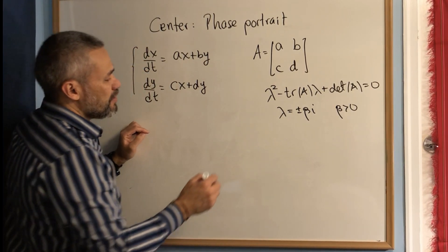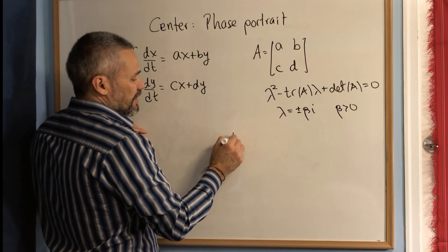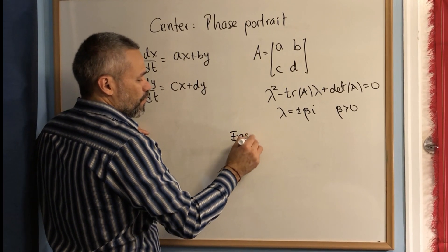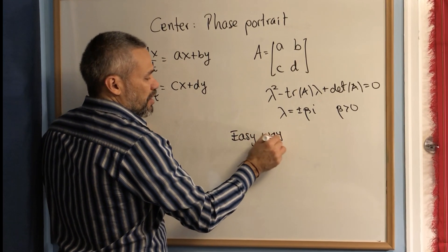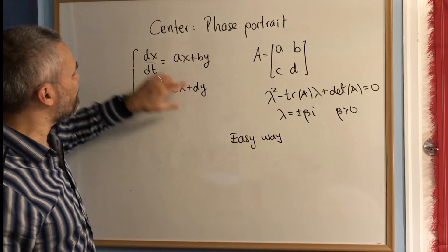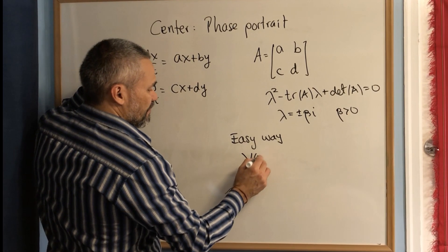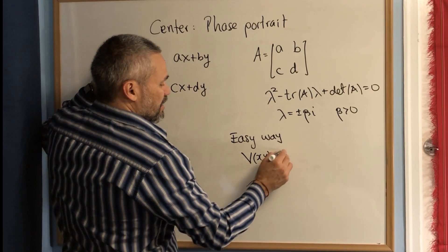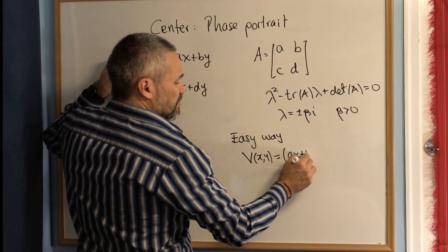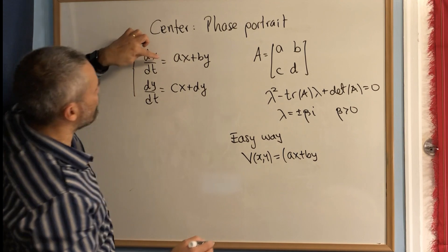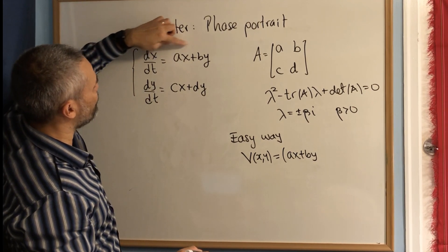For the easy way, we need to consider the vector field associated with this system, which is V(x,y) = (ax+by, cx+dy). The first entry is whatever is in front of dx/dt, and the second entry is whatever is in front of dy/dt.